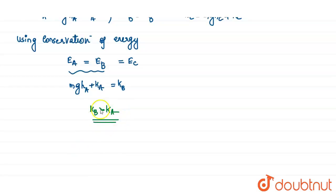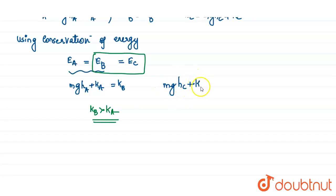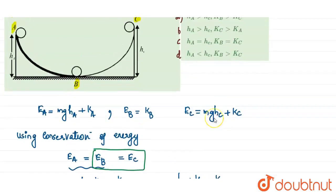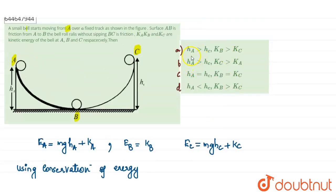Next, equating B and C: mgh_C plus KC equals KB. This gives us KB is greater than KC, and KB is greater than KA. This is the first condition regarding the kinetic energies. Next we need to check the height condition.